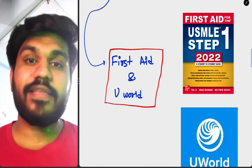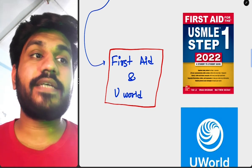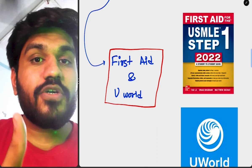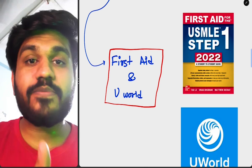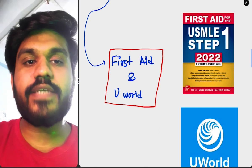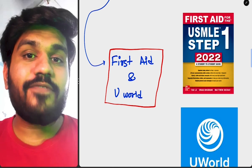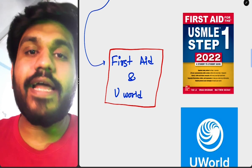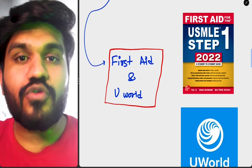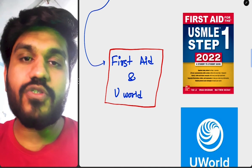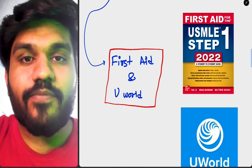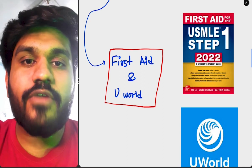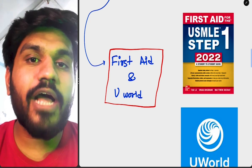Those two best resources are First Aid and UWorld. If you have just these two, you will pass the exam — you don't need anything else to pass except these two. First Aid gives you the knowledge; UWorld gives you the assessment. Not everyone can manage only two resources, so I suggest studying all the materials mentioned in this video, but if you had to choose two, it's First Aid and UWorld.